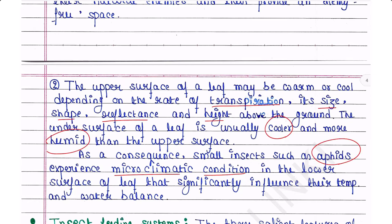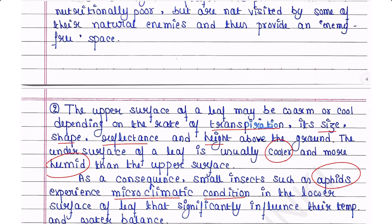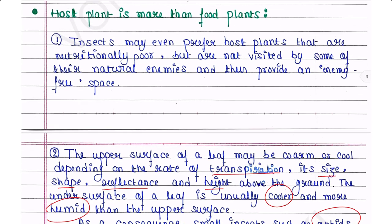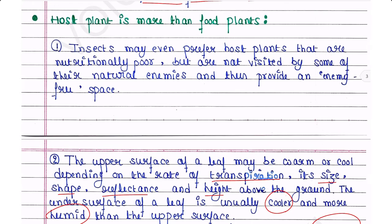So we could say that plants are not only providing nutrition to the insects, but they are providing something else too — such as shelter and favorable microclimatic conditions.